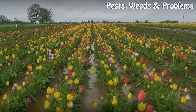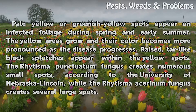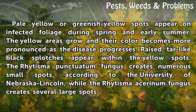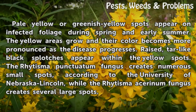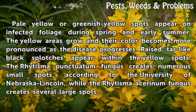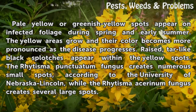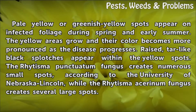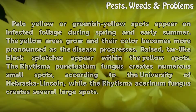Effects: Pale yellow or greenish-yellow spots appear on infected foliage during spring and early summer. The yellow areas grow and their color becomes more pronounced as the disease progresses. Raised, tar-like black splotches appear within the yellow spots. The Rhytisma punctatum fungus creates numerous small spots, according to the University of Nebraska-Lincoln, while the Rhytisma acerinum fungus creates several large spots.